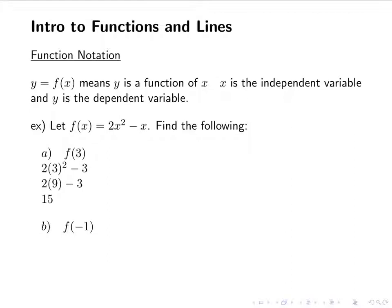The next one is f of negative 1. 2 times negative 1 squared minus negative 1. Negative 1 squared is 1, the double negative becomes a positive, and we get 3.